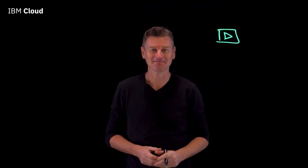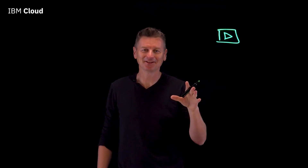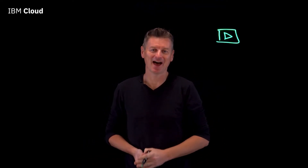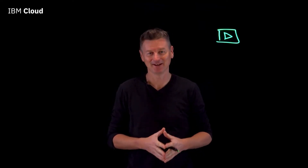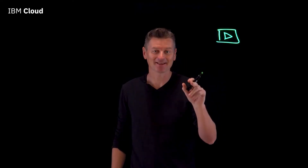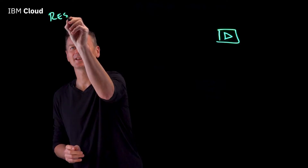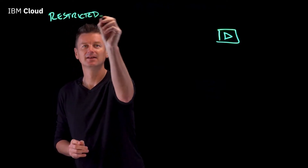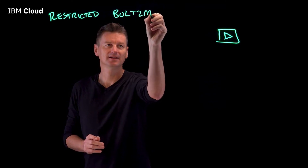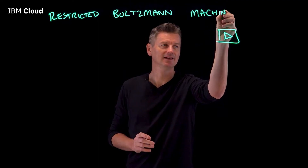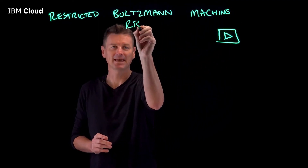At this very moment you've made a decision to watch this video — thank you. But when we're done you'll have another decision to make: do you want to watch another one? To assist you with that, you'll be presented with a personalized list of videos that might interest you, and that's a great use case for something called a Restricted Boltzmann Machine, or RBM.